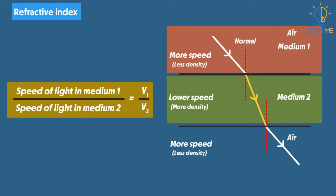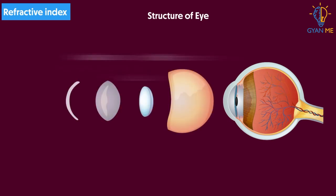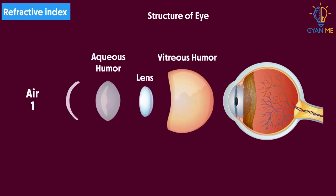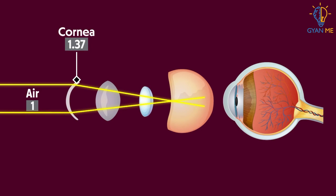Coming back to the eye — the refractive index of air is 1, and that of the cornea is 1.37, which is approximately 1.4. There is a big difference in the refractive indices of air and cornea. As a result, light bends as it travels from the air to the eye. Since the difference in refractive index is very significant, the refraction of light is also much more here.